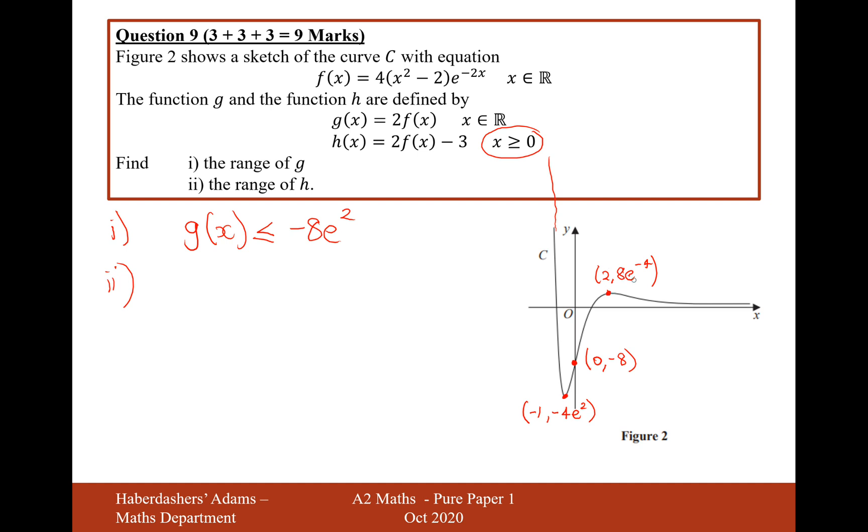So what we now need to do is apply this transformation to the minimum point at 0, minus 8 and the maximum point at 2, 8e to the minus 4. So if we now put h(x) in the middle. And on the lower side, I'm going to stretch it down by a scale factor of 2 and then minus another 3 from it. So stretch it by a scale factor of 2 again, it's down to minus 16 and then decrease it by another 3. That'll be now minus 19 on the lowest point of this graph. And then on the highest point of this graph, we'll be at 8e to the minus 4. So now if we stretch that up by a factor of 2, that'll be 16e to the minus 4 and then minus 3, 16e to the minus 4 minus 3. So there we are, that's the range of h and above is the range of g.